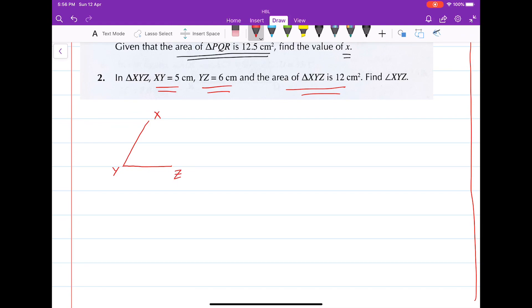We know that XY is 5 centimeters, YZ is 6 centimeters, and we have this angle over here, which is what we want to get. So let's focus on this triangle.